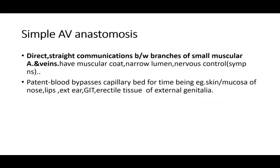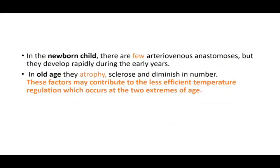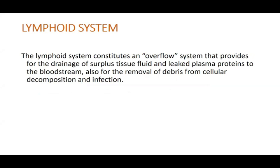Simple arteriovenous anastomosis is a direct straight communication between branches of small muscular veins with narrow lumens, controlled by the nervous system. In newborns there are few arteriovenous anastomoses, but they develop rapidly over the years. In old age they atrophy and diminish in number. This is why the body temperature of an old person or a child cannot be maintained efficiently — arteriovenous anastomosis is less in children and atrophies in old age, reducing their ability to regulate body temperature.